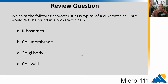Which of the following characteristics is typical of a eukaryotic cell but would not be found in a prokaryotic cell? Is it A, ribosomes; B, a cell membrane; C, the Golgi body; or D, the cell wall? Go ahead and pause the video and think about that one.